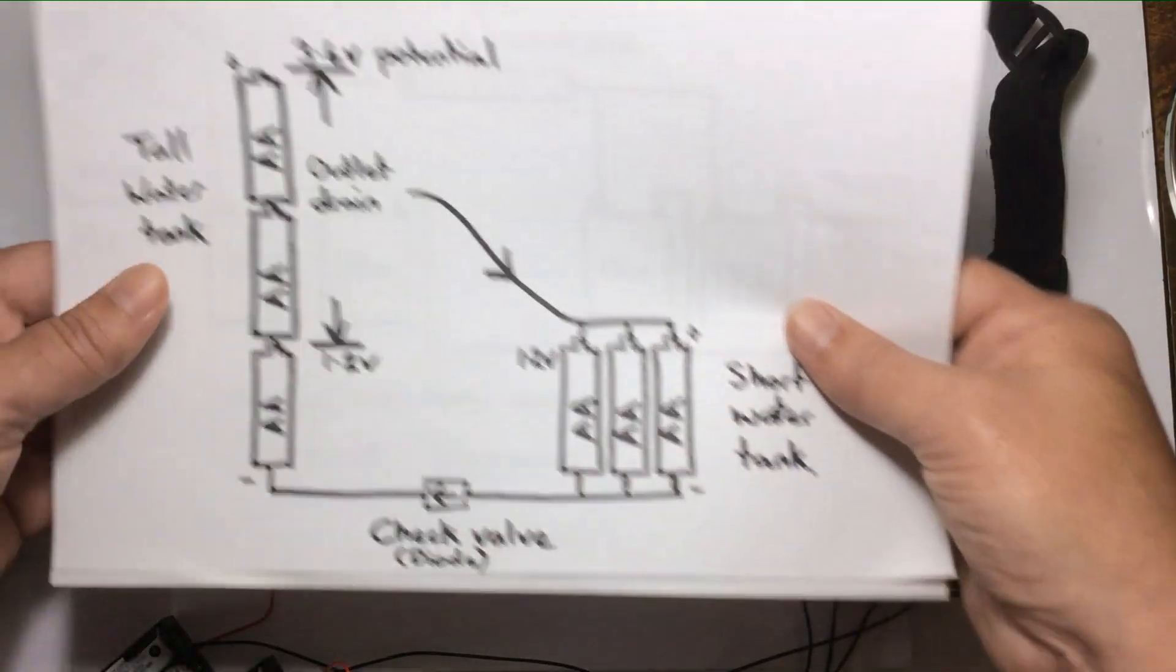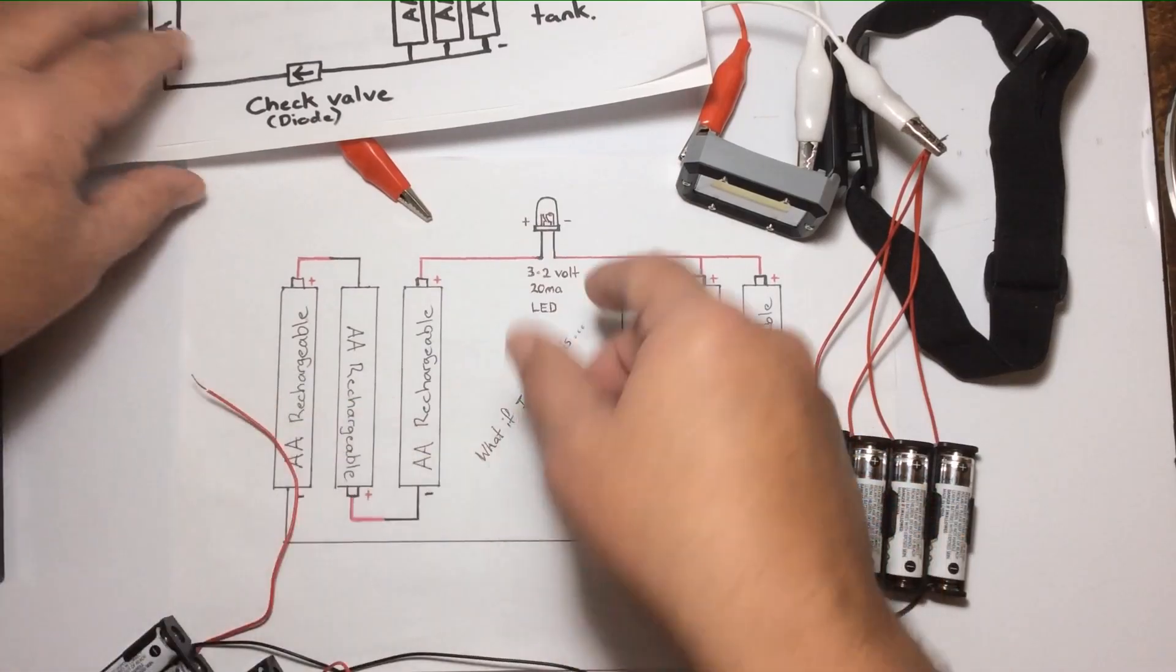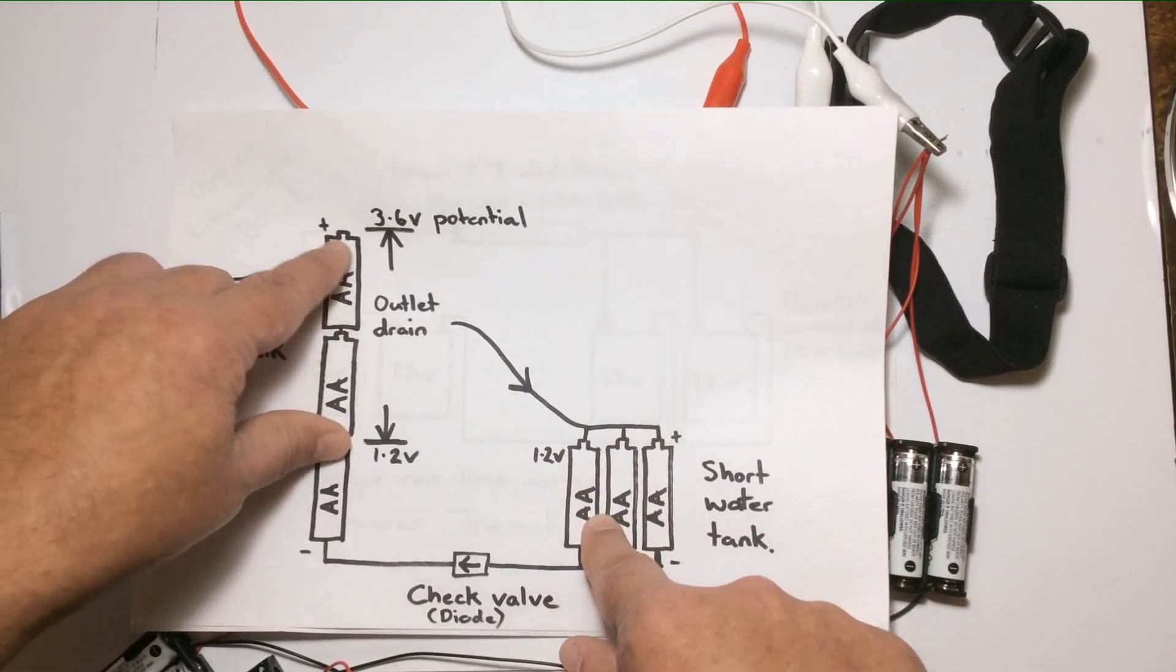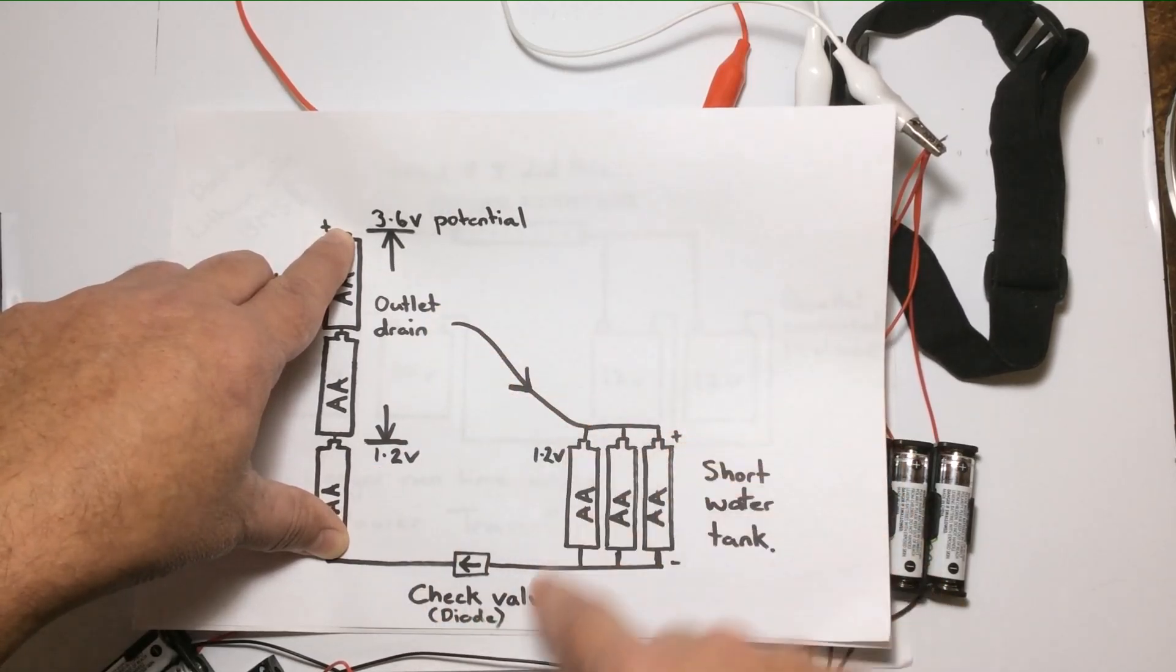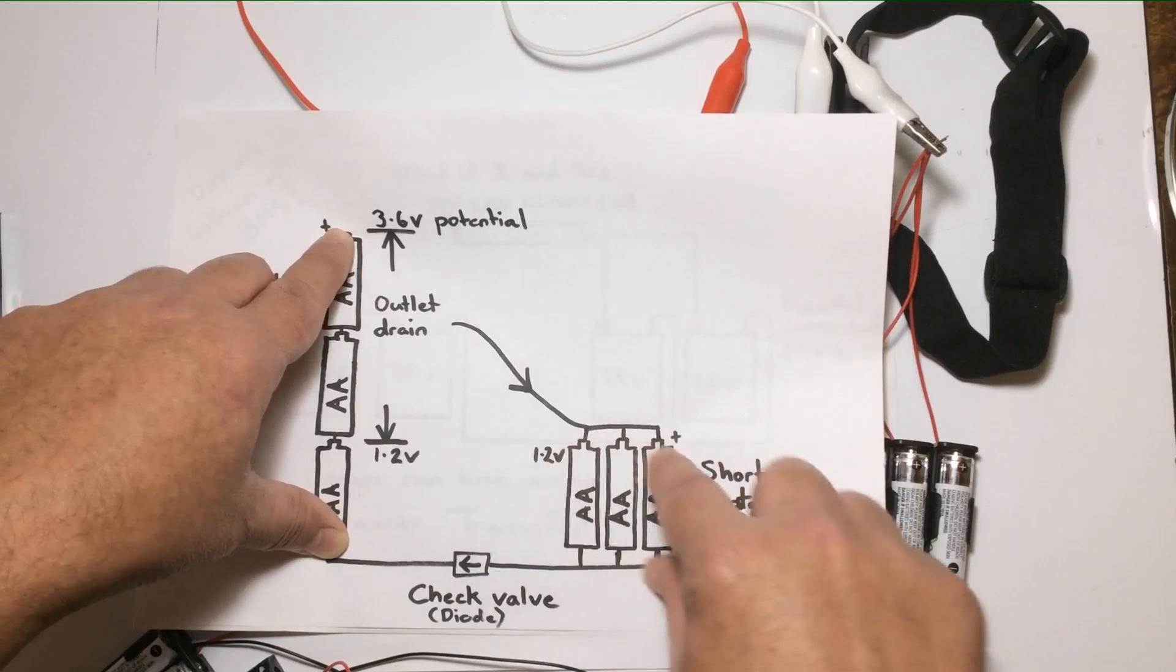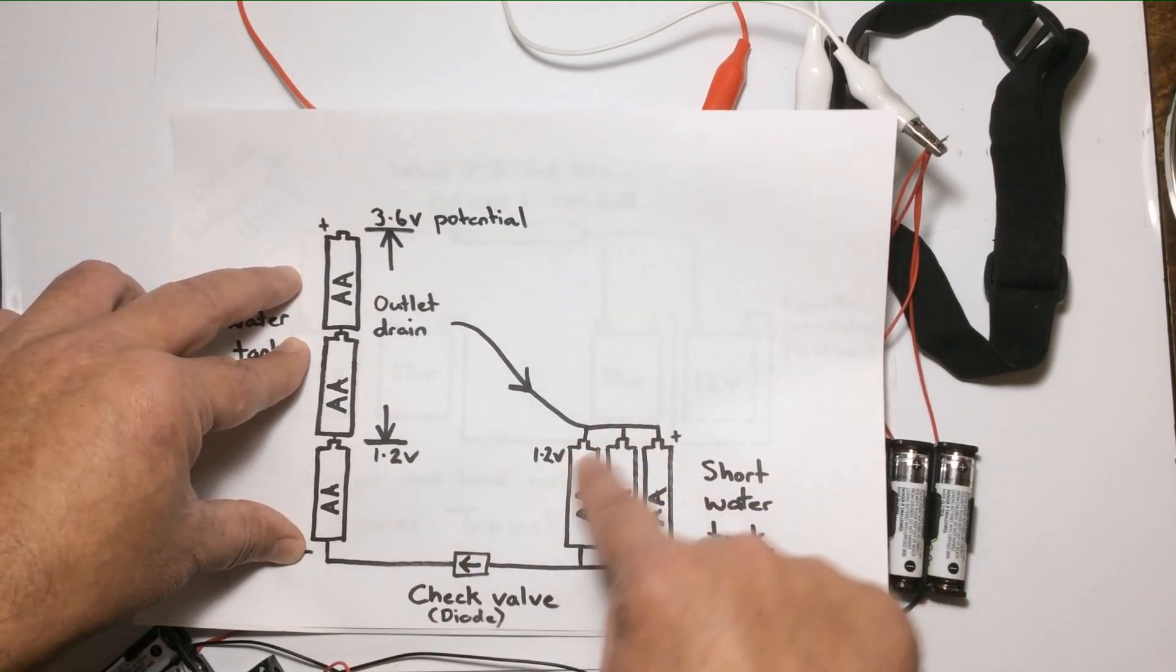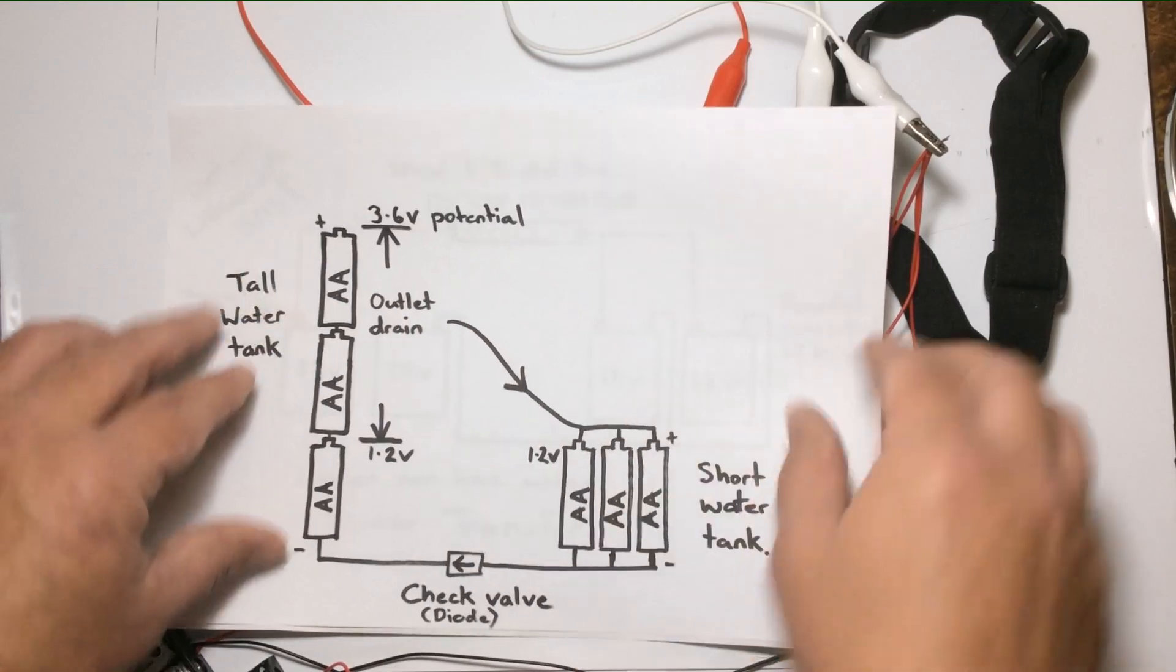Basically, electricity in this case is acting like water and wanting to go to the lower potential, going to ground. So it has a tendency to come from this 3.6 volts and drain through our load, our light, to equalize out to the lower potential. Because we've got three batteries here and three batteries here, and all batteries are of the same capacity, there's enough storage capacity in this set to drain the batteries from this set. So the energy can be transferred and accumulated here.